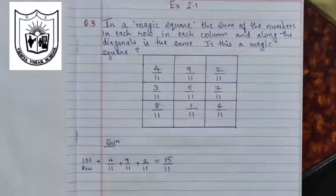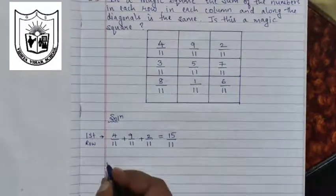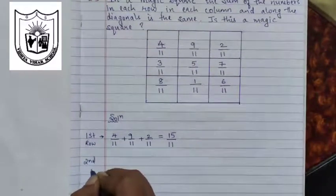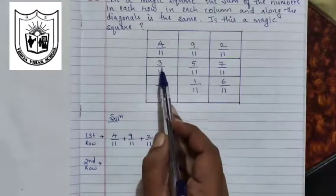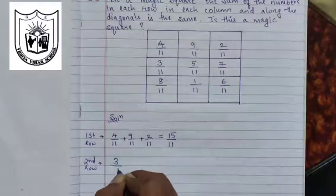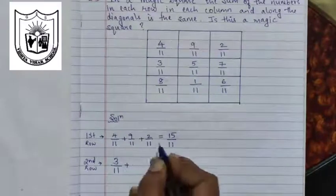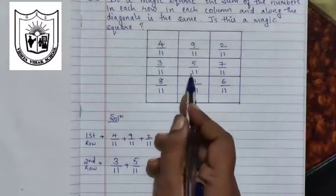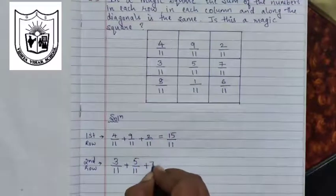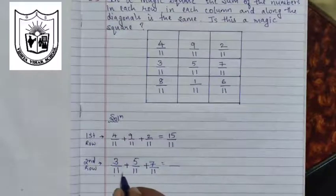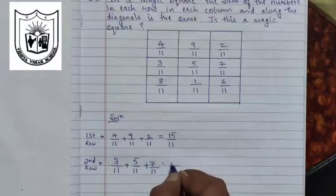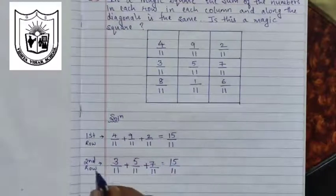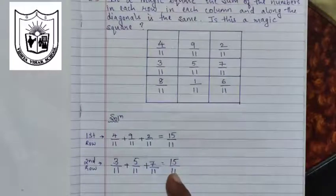Similarly, let us now check along the other rows. Let me consider the second row. Along the second row, the first fraction is 3 upon 11 plus 5 upon 11 plus 7 upon 11. The denominator is common, so we write it once. 3 plus 5 is 8, plus 7 is 15. So even in the second row we have got the same answer, that is 15 upon 11.